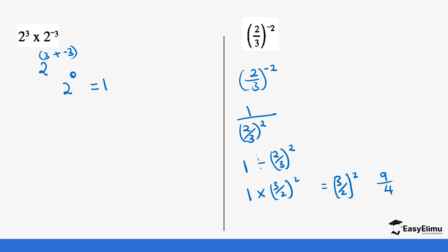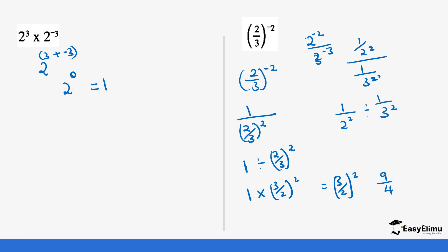Alternatively, you can work it out individually. Two power negative two means one over two power two, divided by one over three power negative two. This is the same as one over two power two times three power two over one. You end up getting the same value: three power two over two power two, which is nine over four. You can see how those values are evaluated using the negative sign.